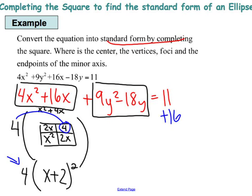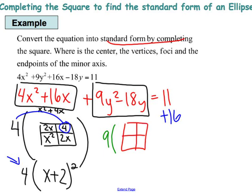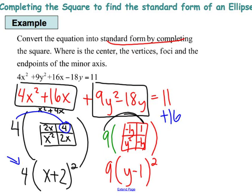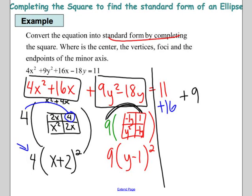Now we do the same process with the y terms. We factor out the 9, working with y squared minus 2y, and put that into a perfect square: y squared minus 1y in each corner gives a 1 in the corner. So the perfect square for y is 9 times y minus 1 squared. That created 9 times 1 equals 9, so I have to add 9 to the other side. On the right side I now have 36.